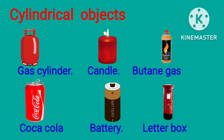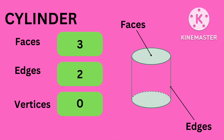Cylindrical-shaped objects: look at the shapes of objects below. All these objects have a cylindrical shape — gas cylinder, candle, butane gas cylinder, Coca-Cola can, battery, letterbox. The cylindrical shape has two faces, two edges, and no vertices or corners.